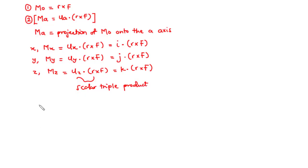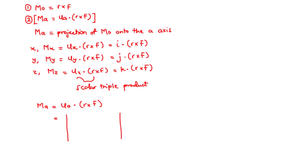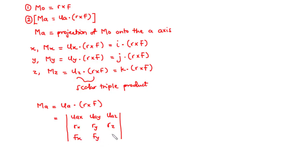From the second equation, given that M-A equals U-A dot R cross F, to find the moment about a specified axis A, you construct a 3x3 determinant whose first row consists of the unit vector components along X, Y, Z that define the direction of the A axis — that is U-A-X, U-A-Y, and U-A-Z. The second row consists of the components of the position vector R: R-X, R-Y, R-Z. The third row consists of the force components F-X, F-Y, F-Z.